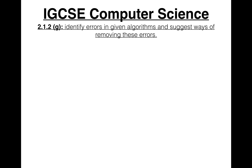IGCSE Computer Science syllabus statement 2.1.2g: identify errors in given algorithms and suggest ways of removing these errors. Now that we understand how pseudocode and flowcharts work, we can start identifying errors in algorithms that the exam will give you.